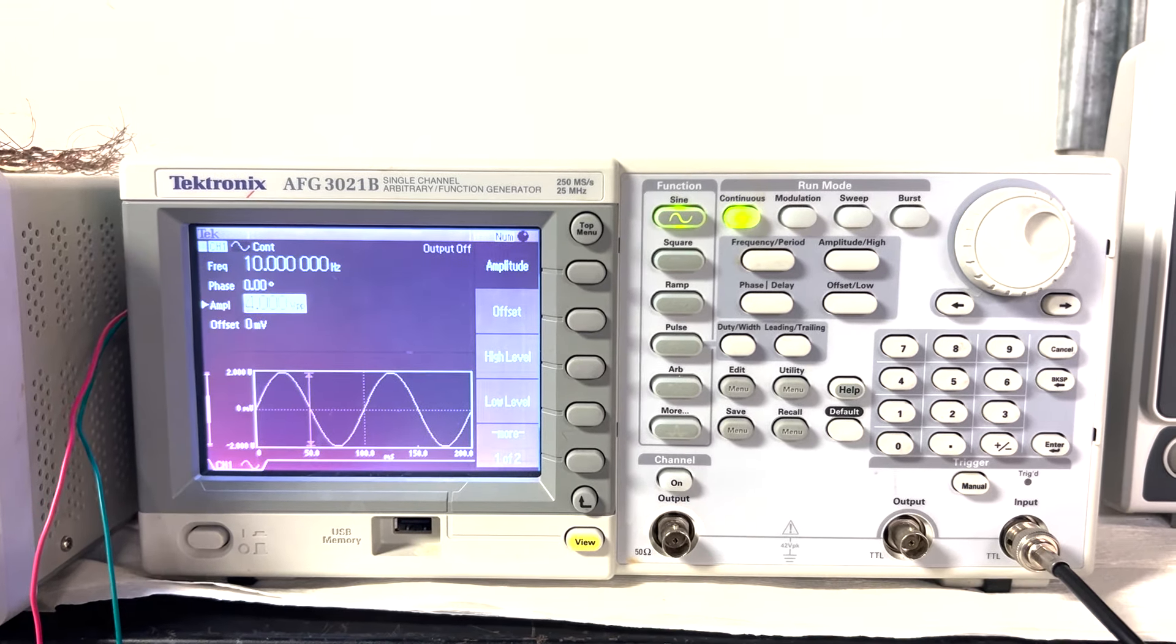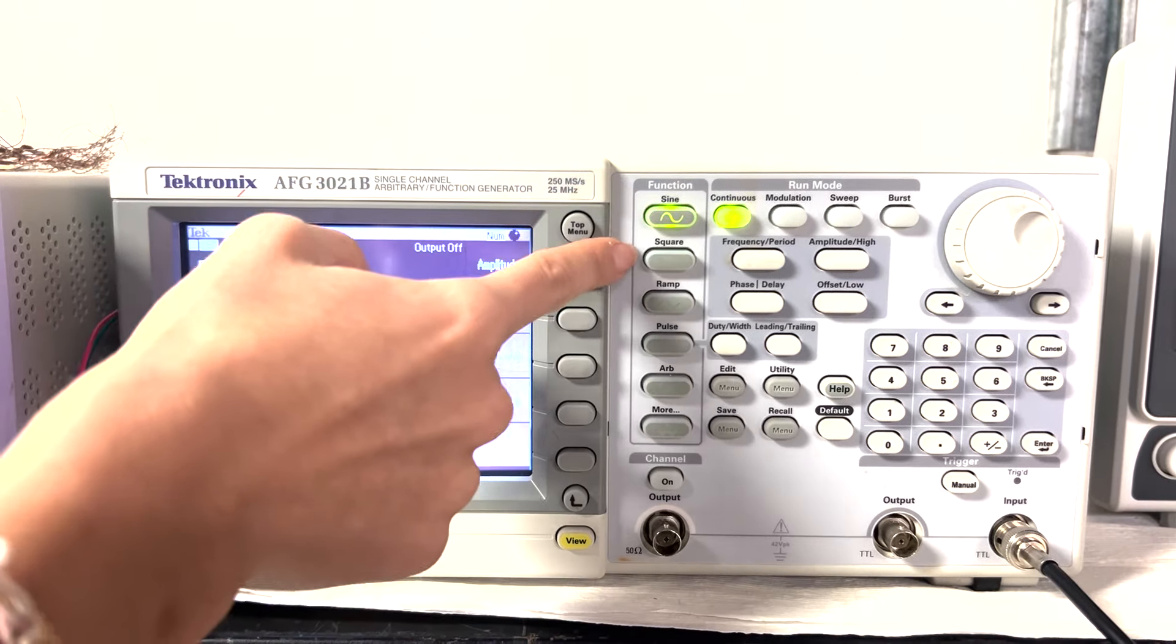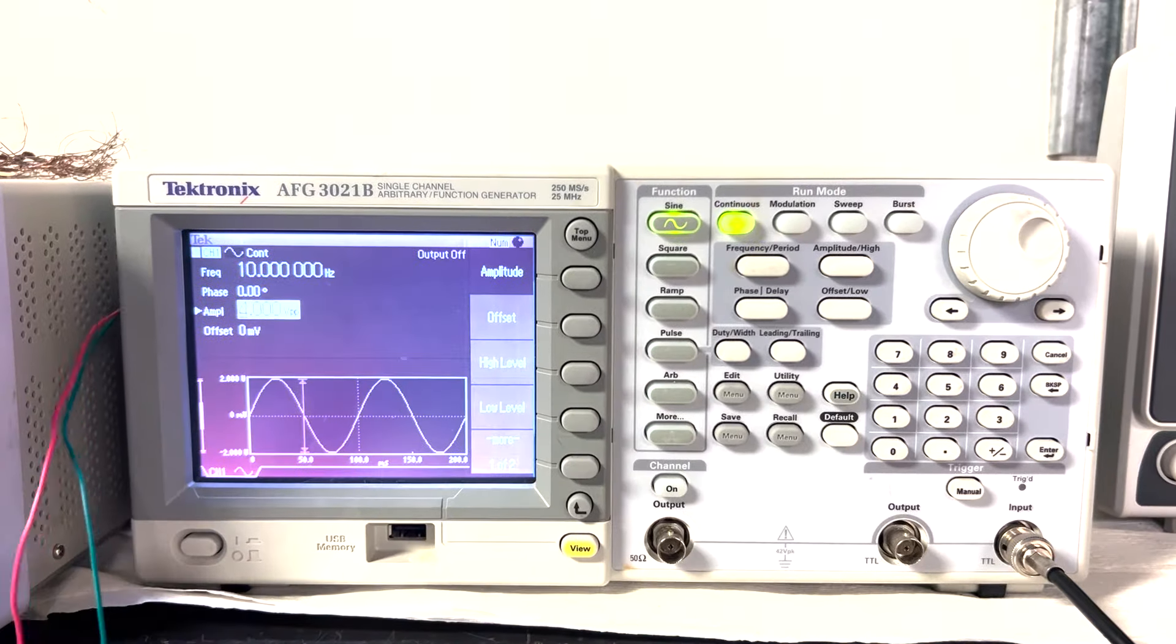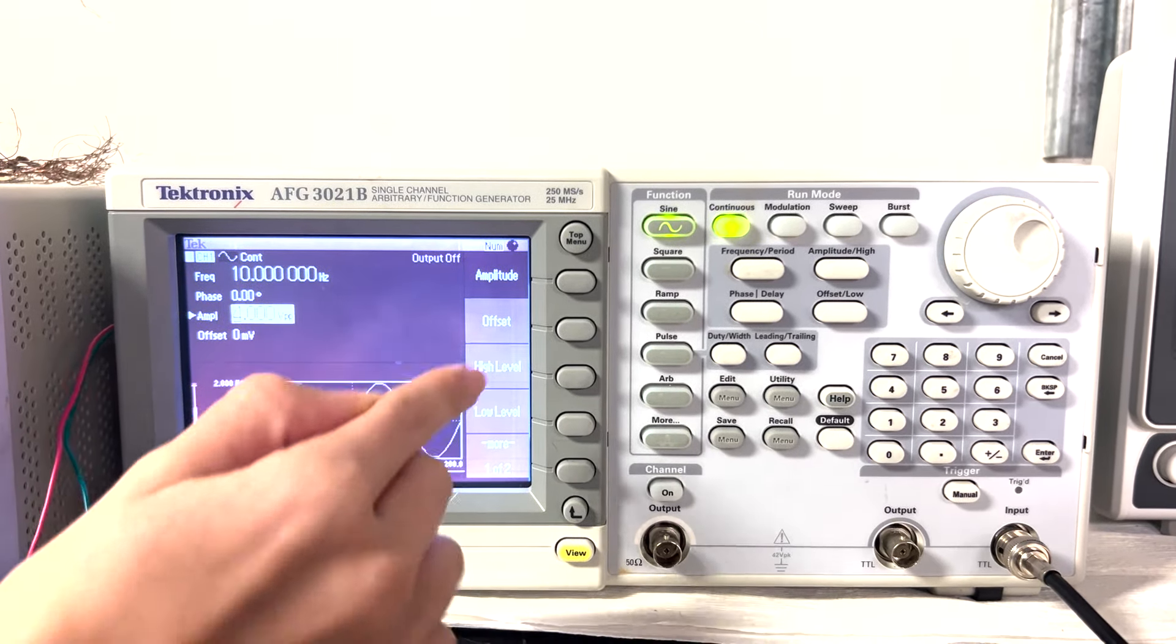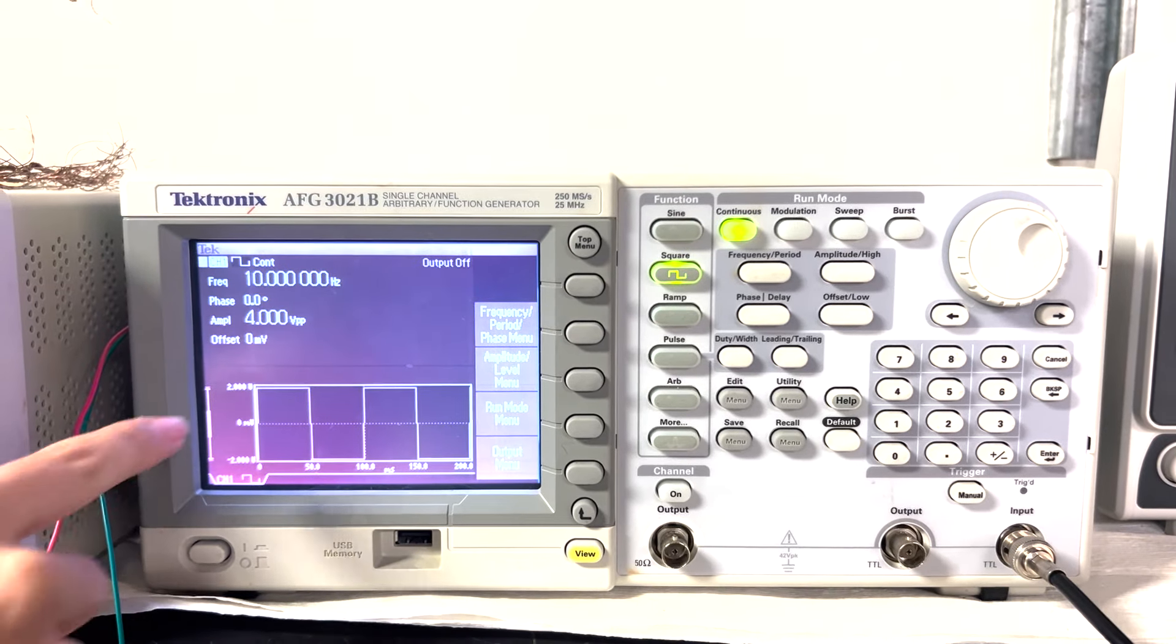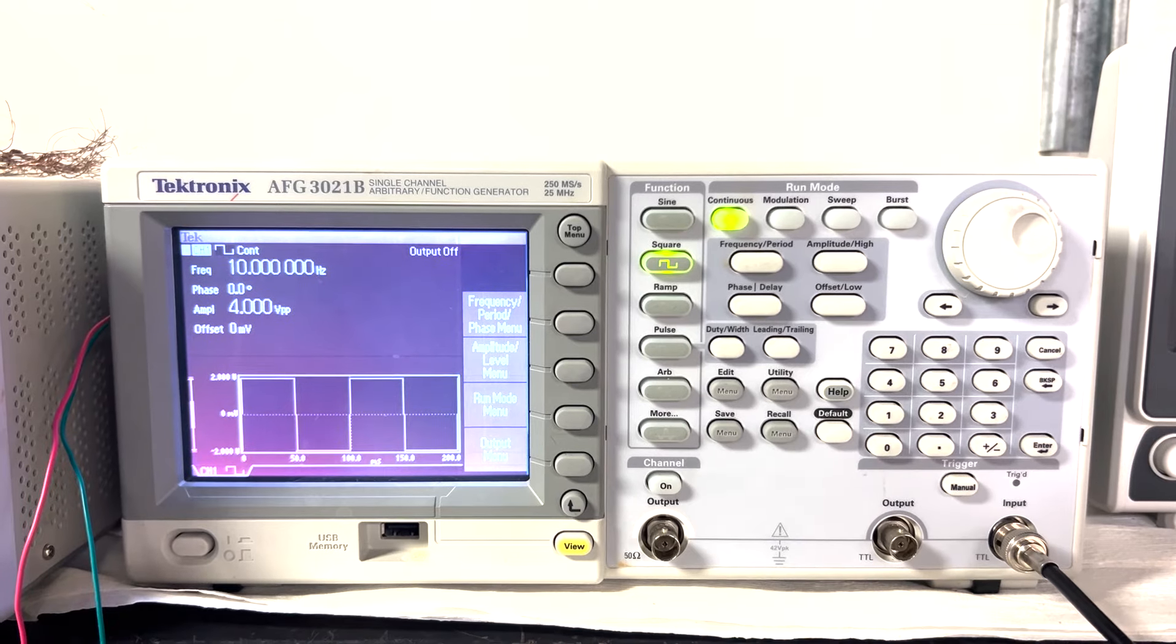And then you also have different functions here. So you have sine, square, ram, which is a triangle, pulse. Those are like the most common ones. So you select the desired function. Here in this case, I'm going to use the square one. And on the lower side of the screen, you can see a visual representation of the function.